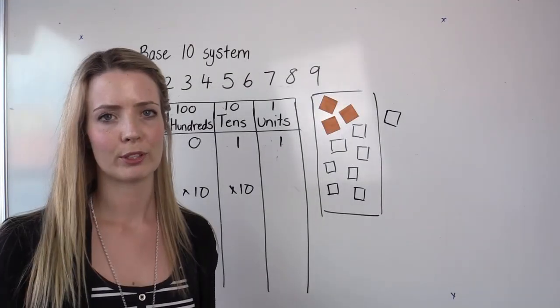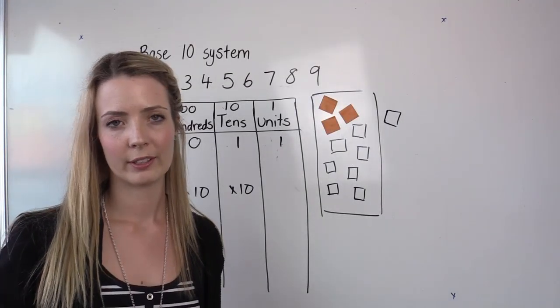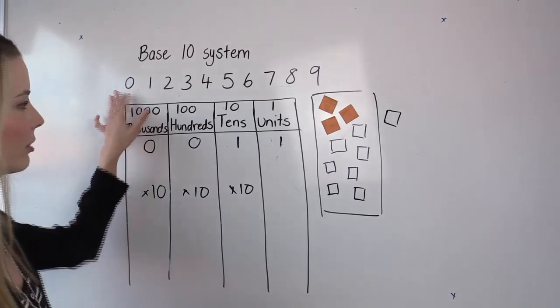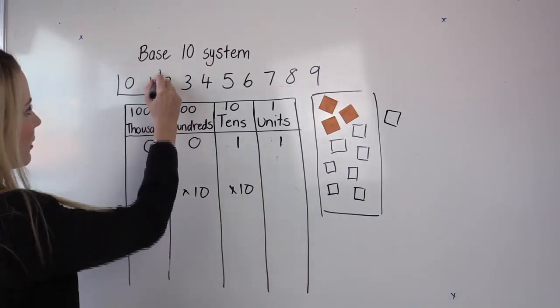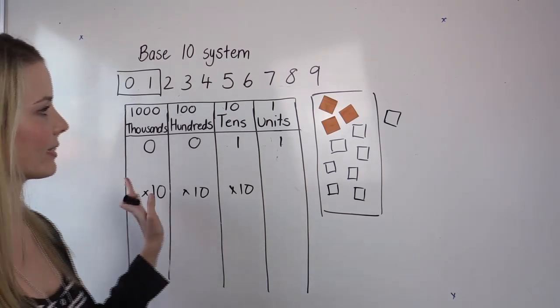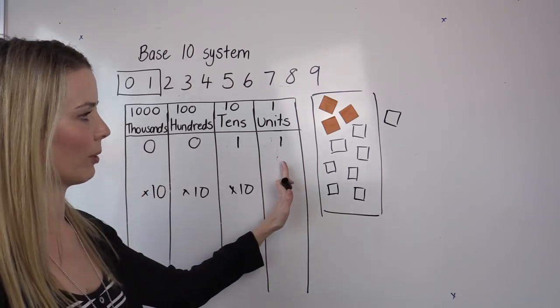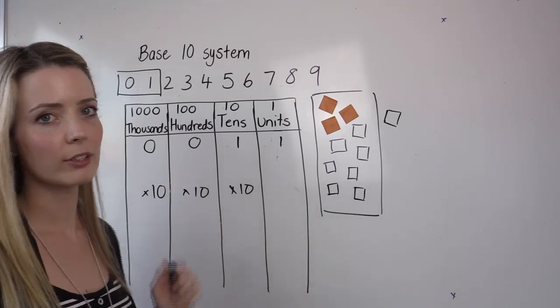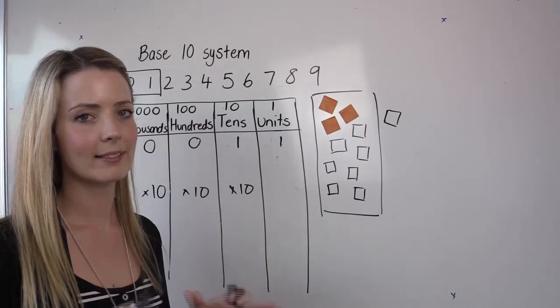The binary system works with the base of two. So this means that we're working with two numerals, which are zero and one. And previously, we worked with these columns. And we can do the same to explore binary. It makes it a little bit easier.